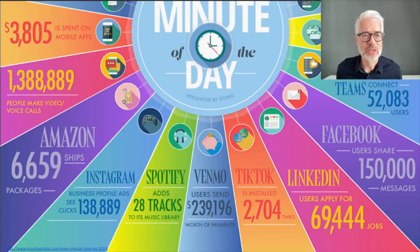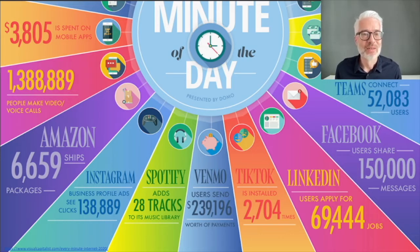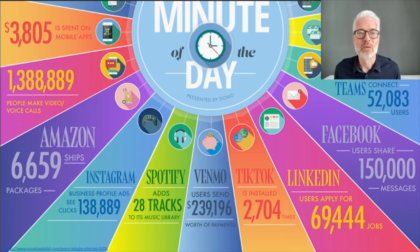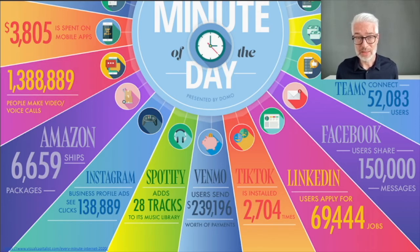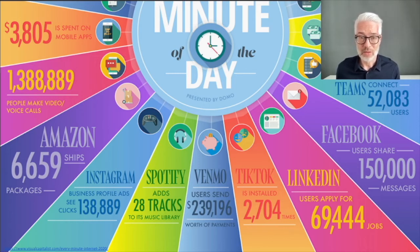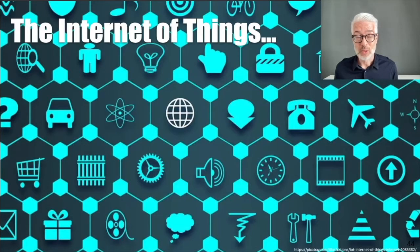The graphic also shows that Amazon ships more than 6,000 packages per minute, Spotify adds 28 tracks per minute, Microsoft Teams connects 50,000 or more users per minute, and more than 1.5 million people make video or voice calls. All of these services cause and produce internet traffic — especially the video data being transmitted, which is growing beyond all extent. Another major contributor to information growth on the web is the Internet of Things.